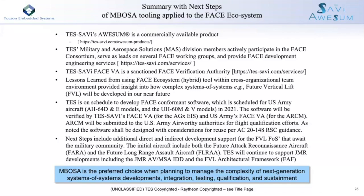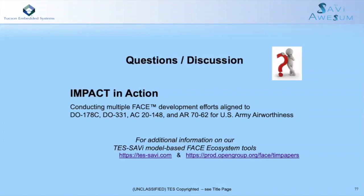The next steps will be indirect and direct development for the Future Vertical Lift family of systems that awaits the community. That aircraft family includes FARA — the Future Attack Reconnaissance Aircraft — and FLRAA, the Future Long-Range Assault Aircraft. We're currently supporting GMR efforts, the Air Vehicle Mission System Architecture IDD, and the FAF, which is the architectural design for the FVL. If you need to find additional information, there are links on the bottom and contact information on the cover page. Thank you very much.